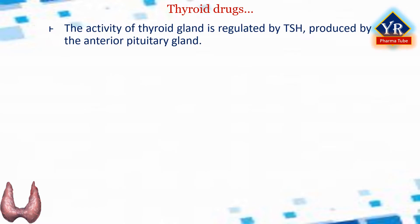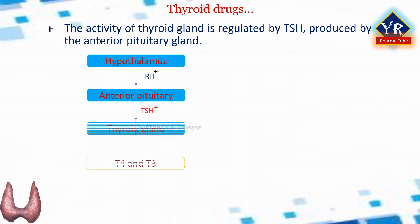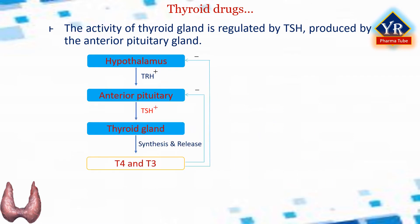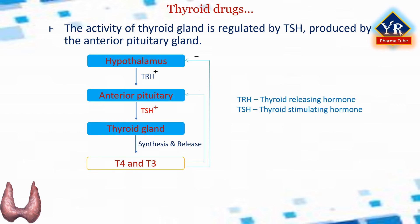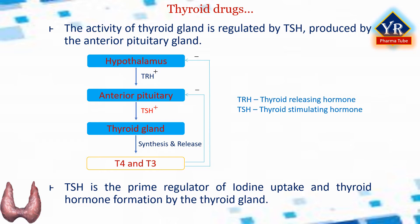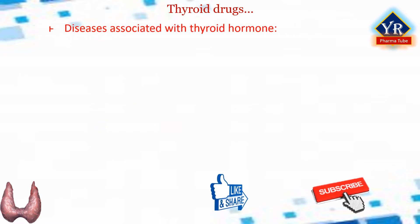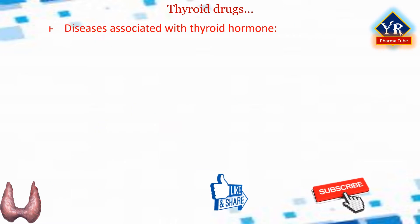The activity of the thyroid gland is regulated by thyroid stimulating hormone produced by the anterior pituitary gland. When the level of circulating thyroid hormones decreases, the anterior pituitary secretes thyroid stimulating hormone which then activates the cells of the thyroid to release stored thyroid hormones. This is an example of the feedback mechanism. Thyroid stimulating hormone is the prime regulator of iodine uptake and thyroid hormone formation by the thyroid gland.